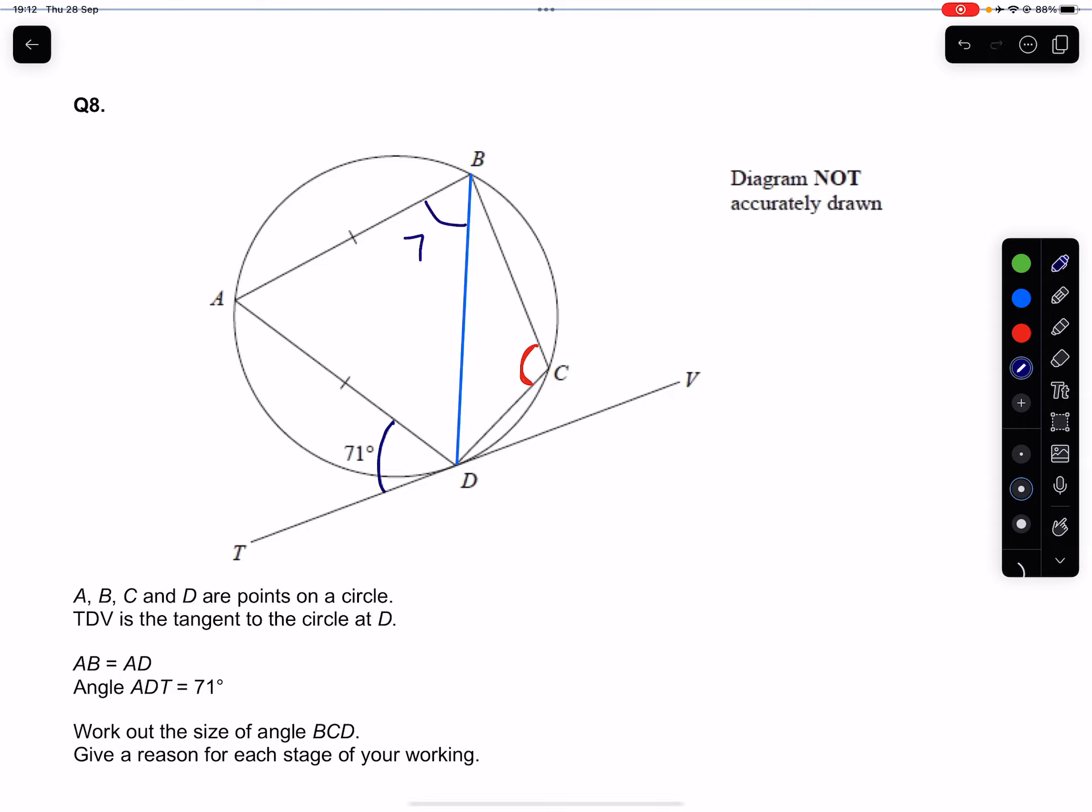So from that, we get this is 71 degrees, and we'd have to write out that angle ABD equals 71, and the reason for that, which we have to give because the question asks for it, would be alternate segment theorem. So that is the first part of this.